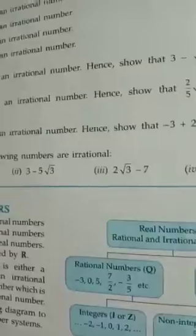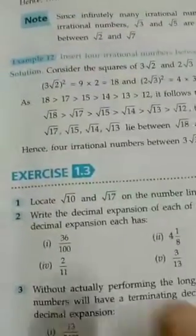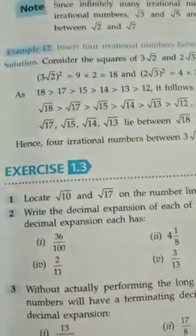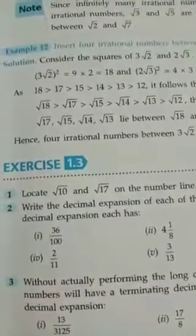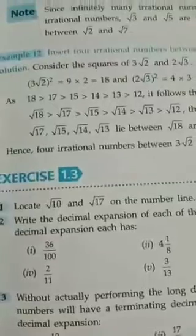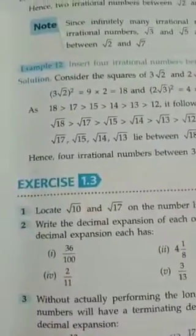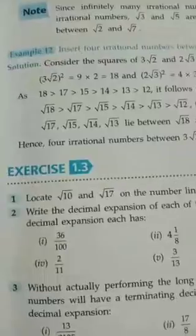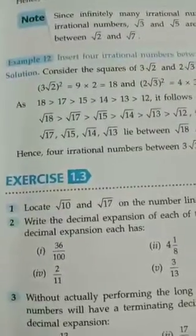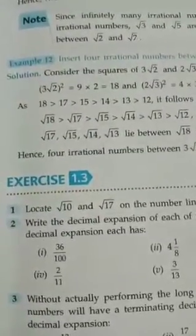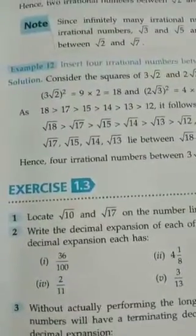Now let us start the sums of Exercise 1.3. The first question says: locate root 10 and root 17 on the number line. So let us take the first number, root 10. As you know, 10 you can write as the sum of squares of two numbers — that is 3 and 1 — so 3 squared is 9 plus 1 equals 10.